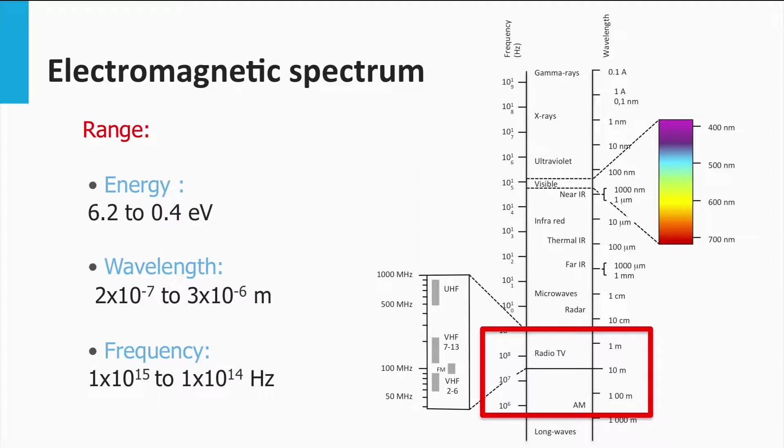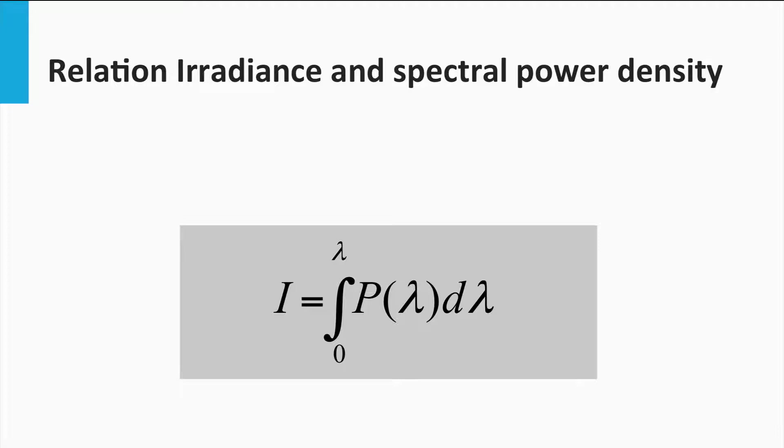The question now is, in which spectral range does the Sun irradiate light? For that I will introduce the quantities irradiance and spectral power density. Let's start with the irradiance. The irradiance is the power per unit area and is usually expressed in watts per square meter. The irradiance does not provide us any information about the spectral shape of the light source. In our course we give the irradiance the symbol I.